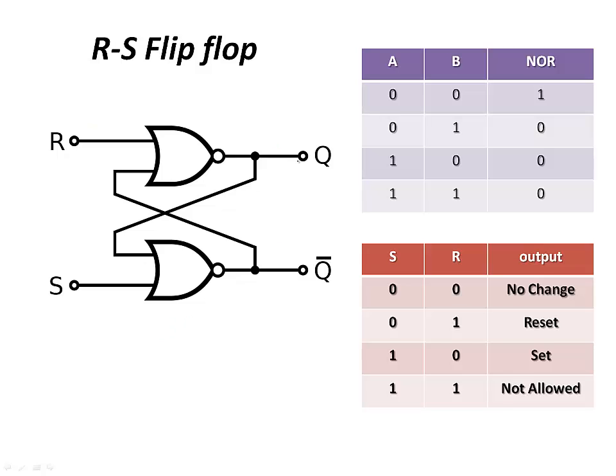Now let us come to the last condition and that is both the inputs are made 1. Meaning that I am giving a reset signal and a set signal simultaneously. Now when this occurs, the flip-flop does not know what to do. Whether to go into a reset state or a set state. And therefore, the output of such an input condition would be unpredictable. It is unpredictable.